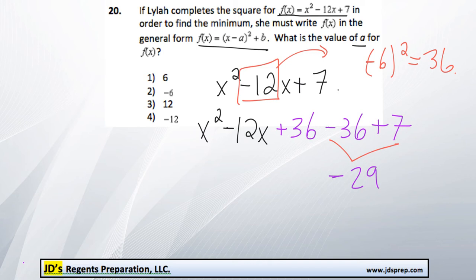These three here is a perfect square trinomial, and that means we can write it as x minus 6 squared.